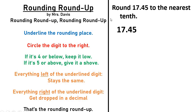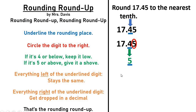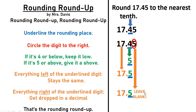Let's try that same problem using our Rounding Roundup song. We're rounding to the nearest tenths place now — last time we rounded to the whole number, now we're rounding to the tenths. Underline the rounding place. Circle the digit to the right. If it's four or below, keep it low; if it's five or above, give it a shove. Remember, it's the circle digit — if it's five or above, like it is here, then the underline digit gets a shove up one. Everything left of the underline digit stays the same. Everything right of the underline digit gets dropped in a decimal. That's the rounding roundup.